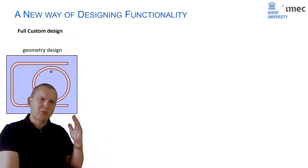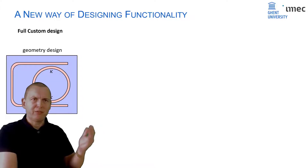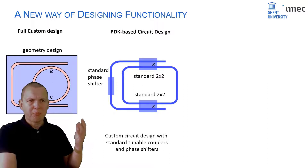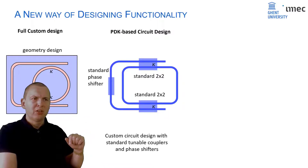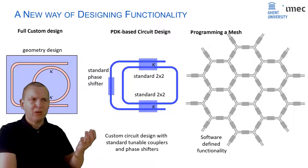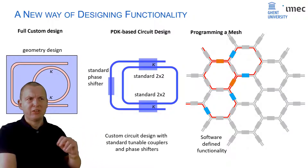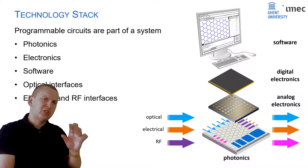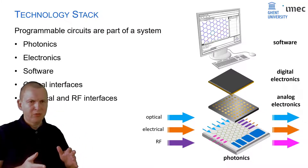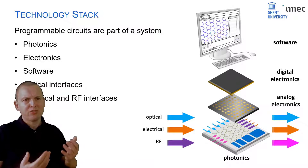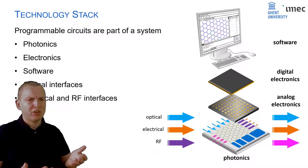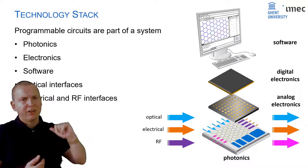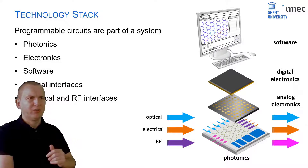This functionality allows you to design a chip in a completely new way. You don't have to design the geometry or put together standard building blocks — you already have a chip which you can program by just changing the state of different elements on the chip. But this chip is only part of the whole stack. If you want to make something programmable, you need the electronics and software layers on top: a photonic chip with analog electronics, digital electronics for control, and a software layer that gives the user an interface.